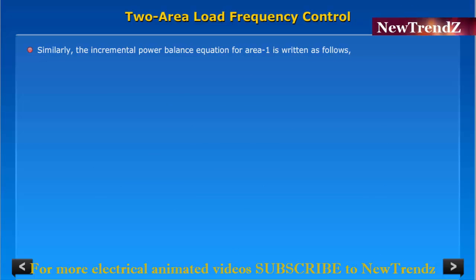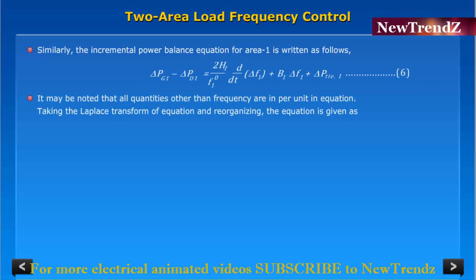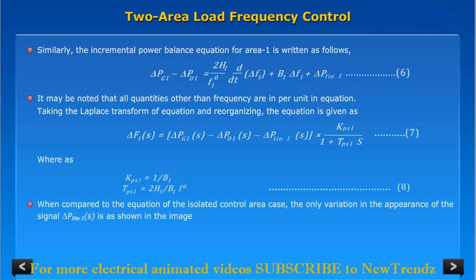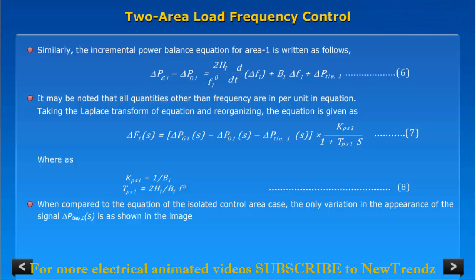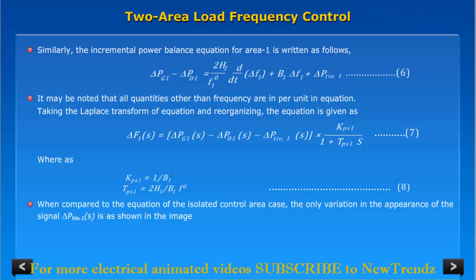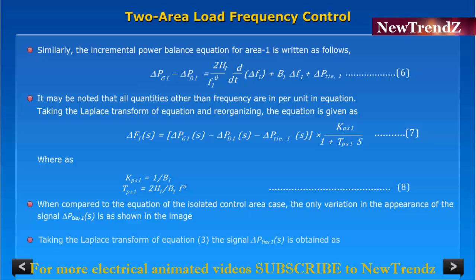The incremental power balance equation for area one is written as follows. It may be noted that all quantities other than frequency are in per unit. Taking the Laplace transform of the equation and reorganizing, the equation is obtained. When compared to the equation of the isolated control area case, the only variation in appearance is the signal Delta P tie one of s, as shown in the image.